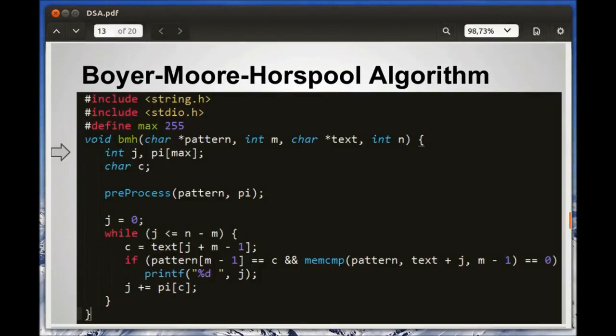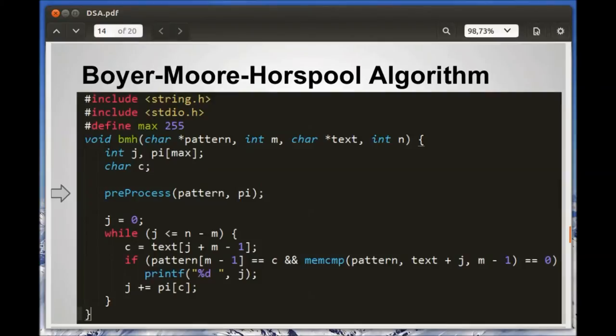Now let's analyze the code. We declare π to have the number of Σ elements, namely max. The preprocessing part is simply recording in each π[i] the rightmost occurrence of character i in the pattern. If a character is not present in the pattern, we allocate the default value, which is max.